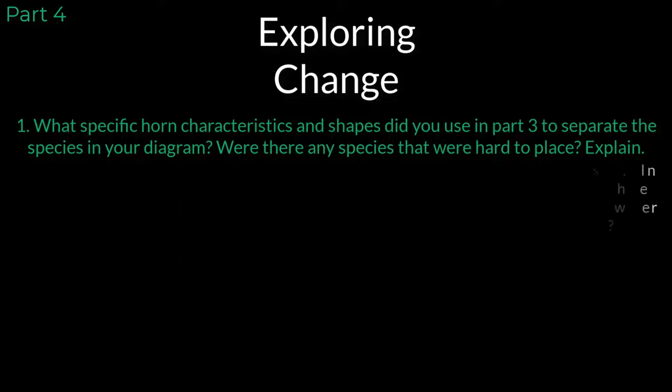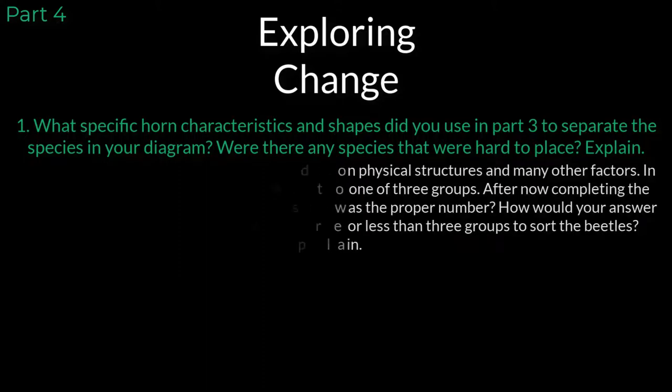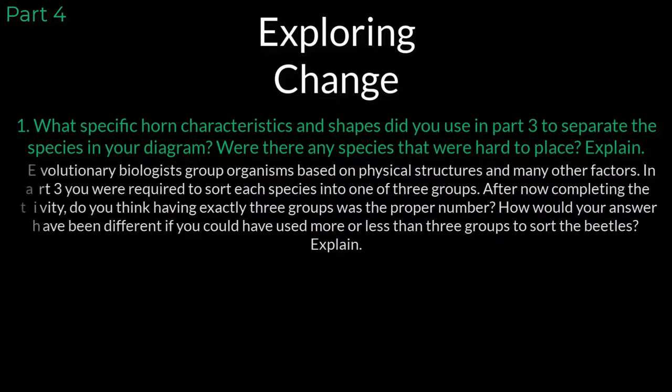Question 2: Evolutionary biologists group organisms based on physical structures and many other factors. In Part 3, you were required to sort each species into one of three groups. After completing the activity, do you think having exactly three groups was the proper number? How would your answer have been different if you could have used more or fewer than three groups to sort the beetles? Explain.